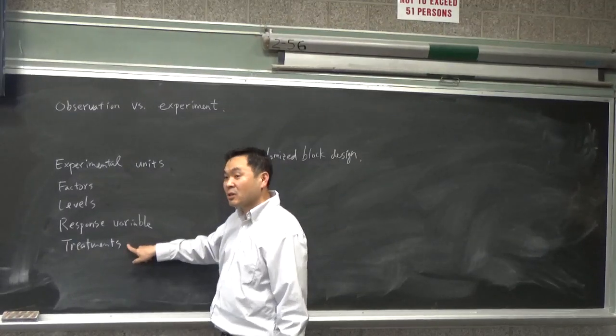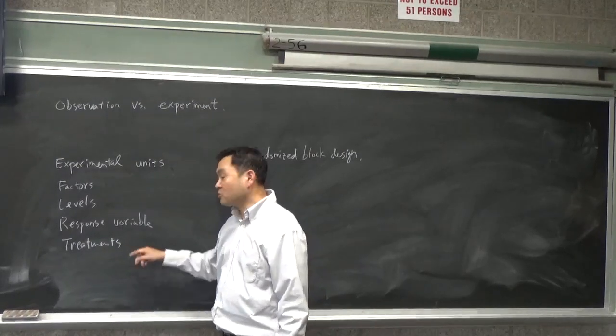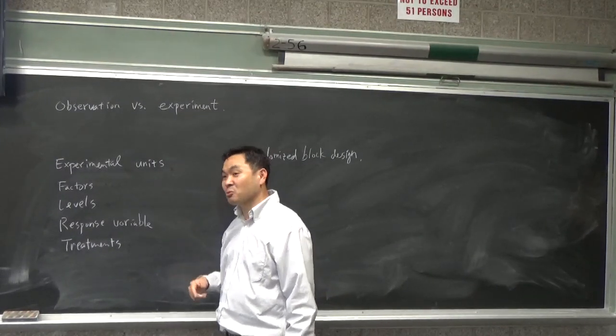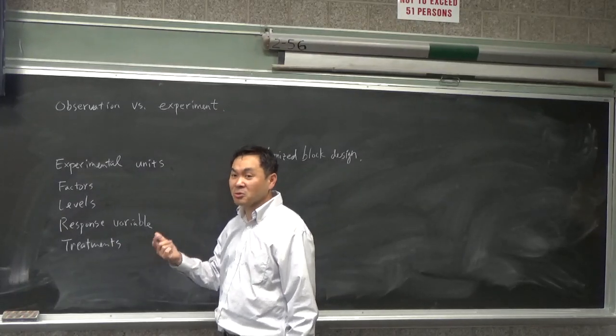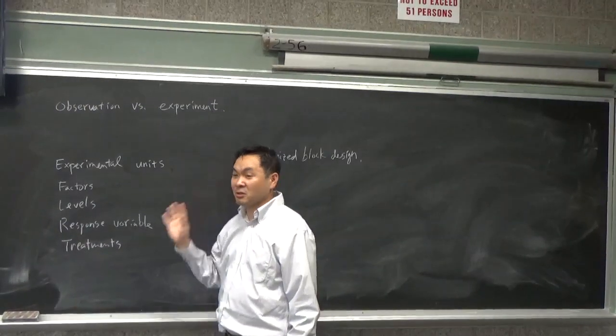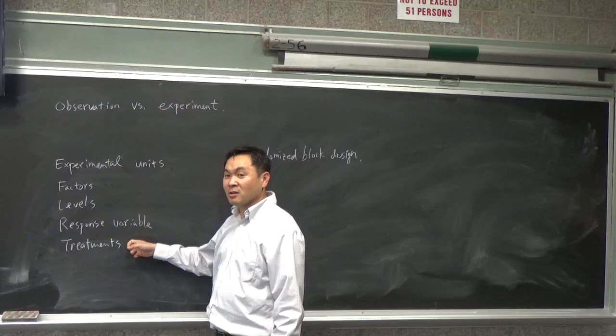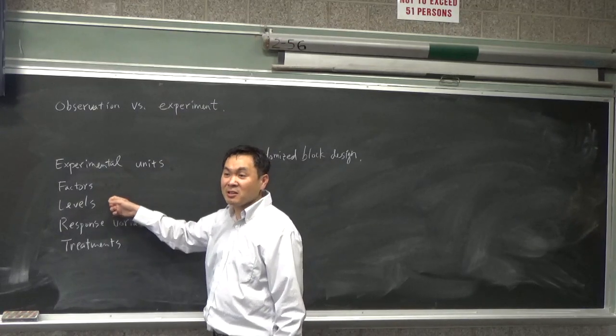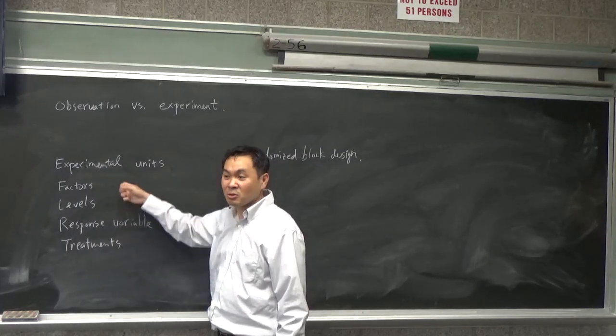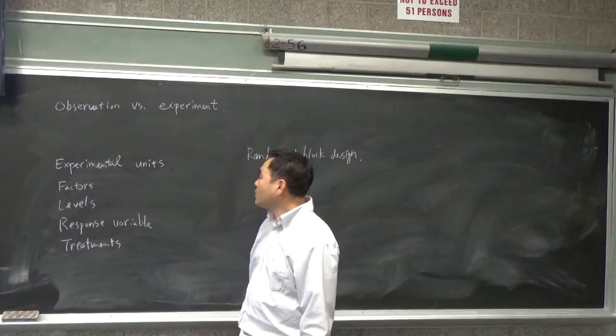And then a treatment would be the combination of the two levels. So one person could have chemo with the trial drug. Another person would have chemo with the placebo. And then you may have no chemo with the placebo and so and so. Okay? So a treatment would be a combination of levels. And treatment and levels would be equal when, when are those equal? When you have one factor, okay? That's one factor.